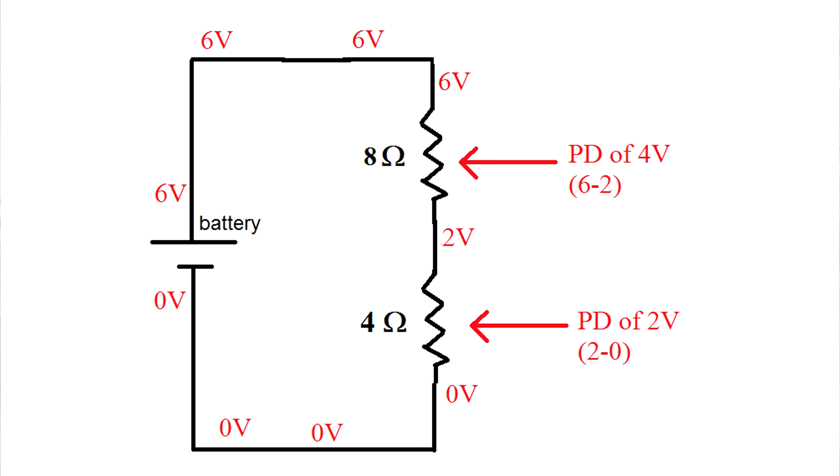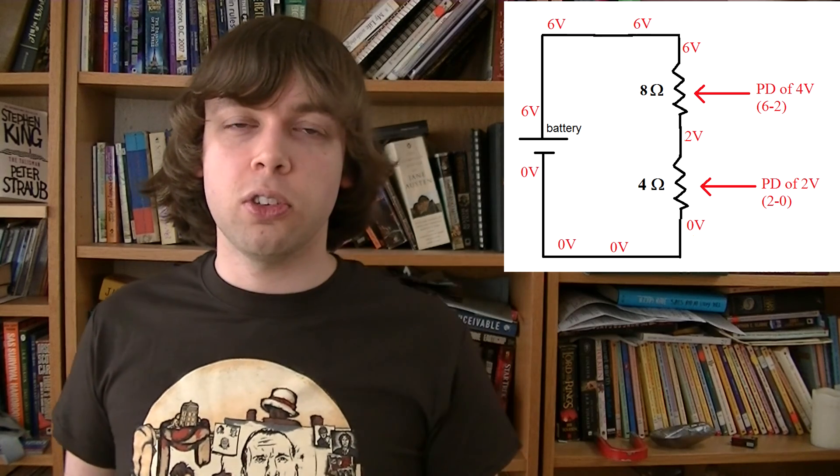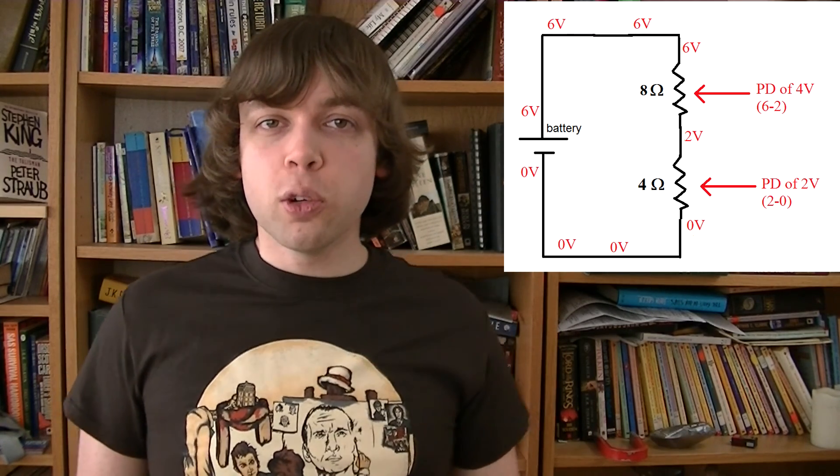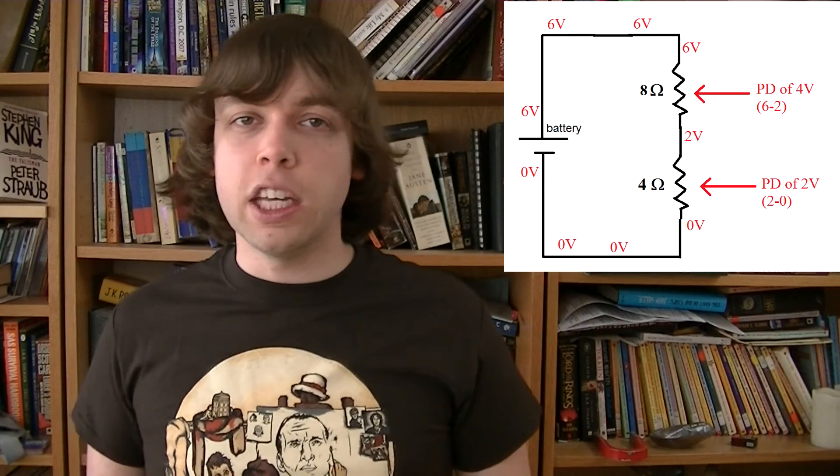So if we have six volts total, resistor one will only take two volts, and resistor two will take four volts. It's all proportional to the resistances. So we're still using up the full six volts of the battery, it's just that they're not equally spread now.